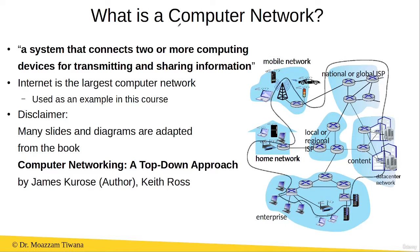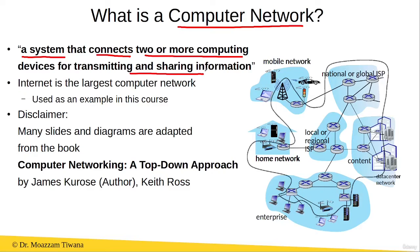We start with the definition of a computer network. A computer network is a system that enables two or more computing devices to connect with one another and to transmit and share information with one another. The internet is an example of the largest computer network on the face of the earth.